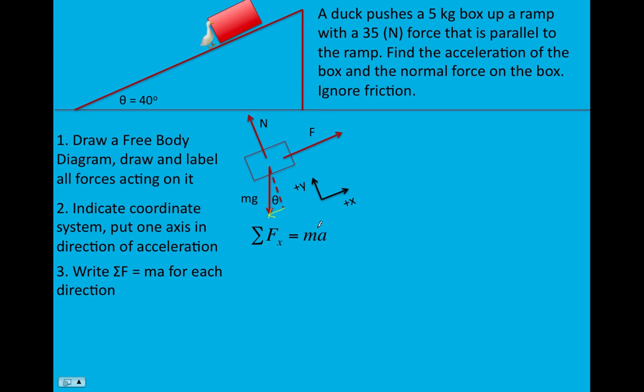And then we have sum of the weight acting in the negative x direction. So this component of the weight is acting down the ramp, trying to keep the duck from pushing the box up. And so we can see that we have a positive force from the duck and a negative component of the weight. It's the opposite side, so it would be mg sine theta. And so that adds up to ma.